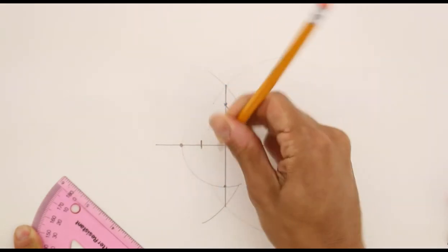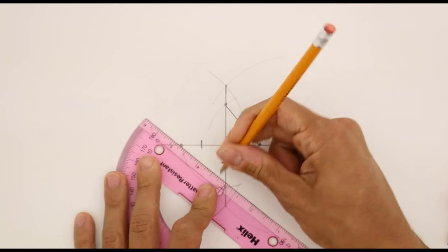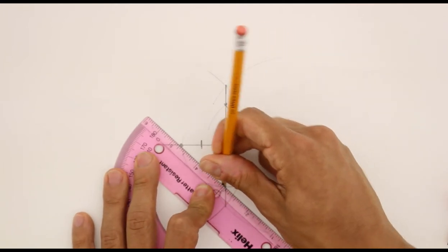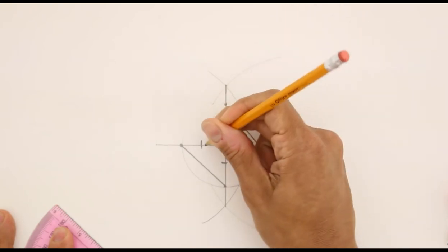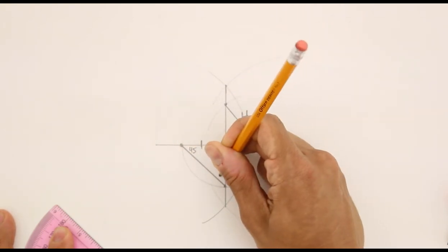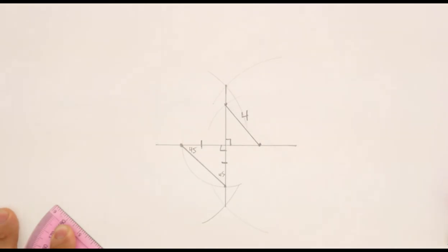Now because that compass was the same, both of these legs of my eventual right triangle will both be congruent. They'll both be four. I won't know what the hypotenuse will be for now, but I do know that I've made an isosceles right angle triangle using just some of the basic tricks of a compass and a straightedge.